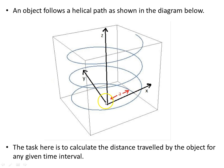You see the radius is A, you have a coordinate system x, y, z set up in the middle of the helix and starting at the base. So the task will be to calculate the distance traveled by the object for any given time interval, so between any two points in time, what will be the distance traveled by this object.